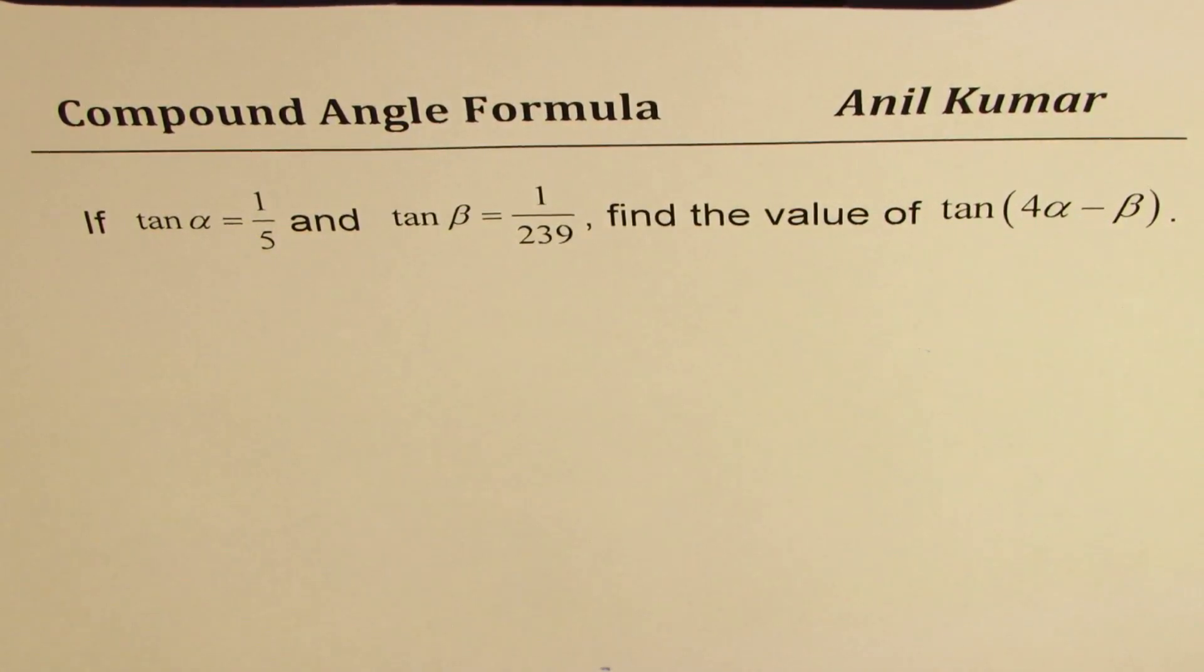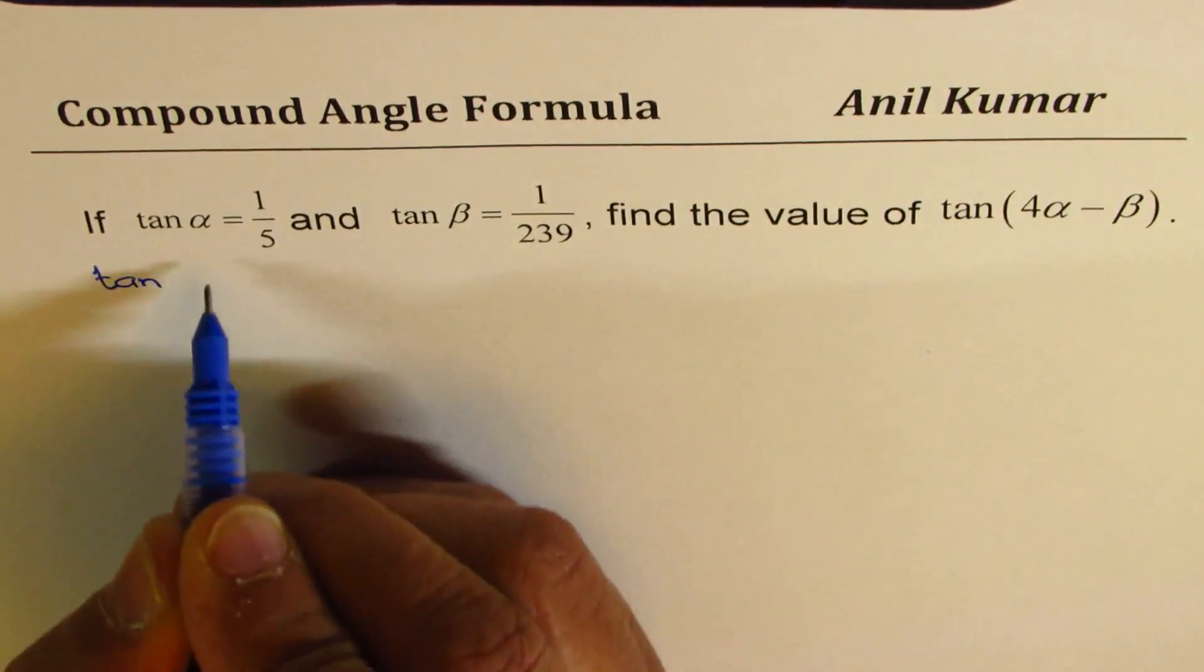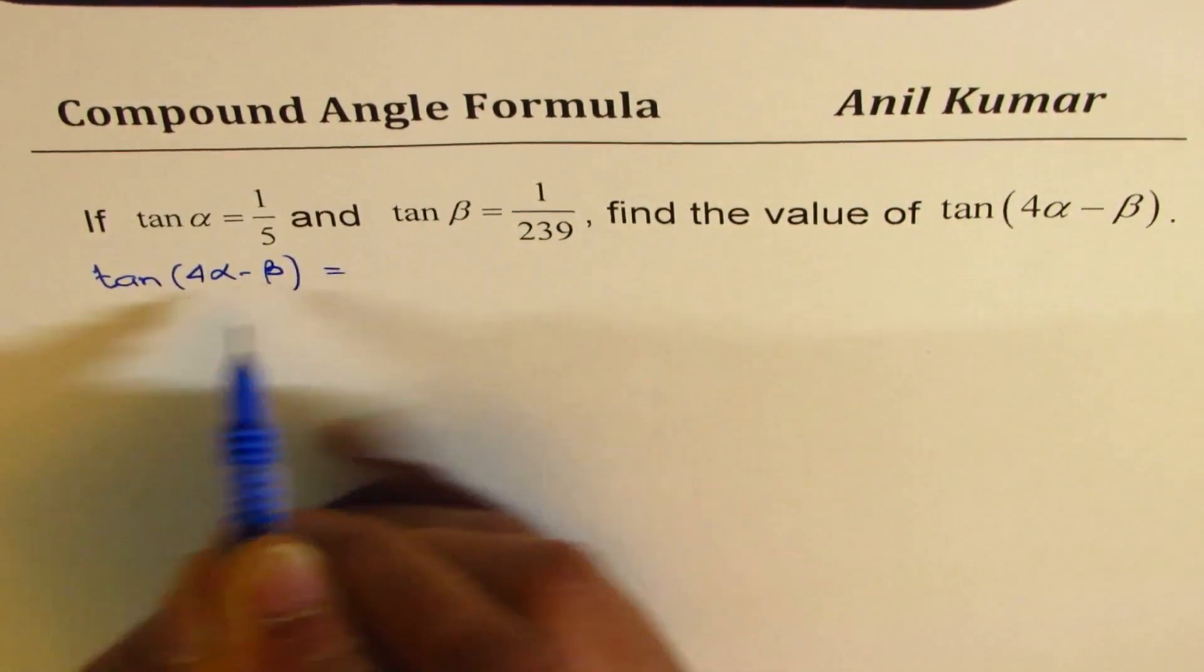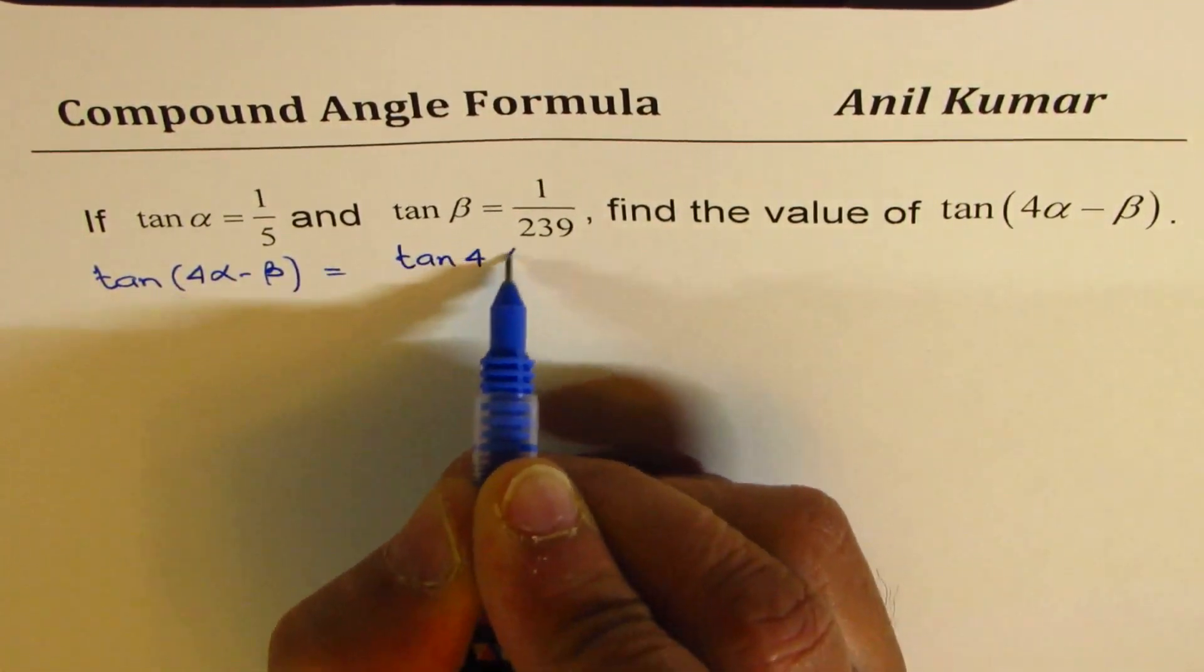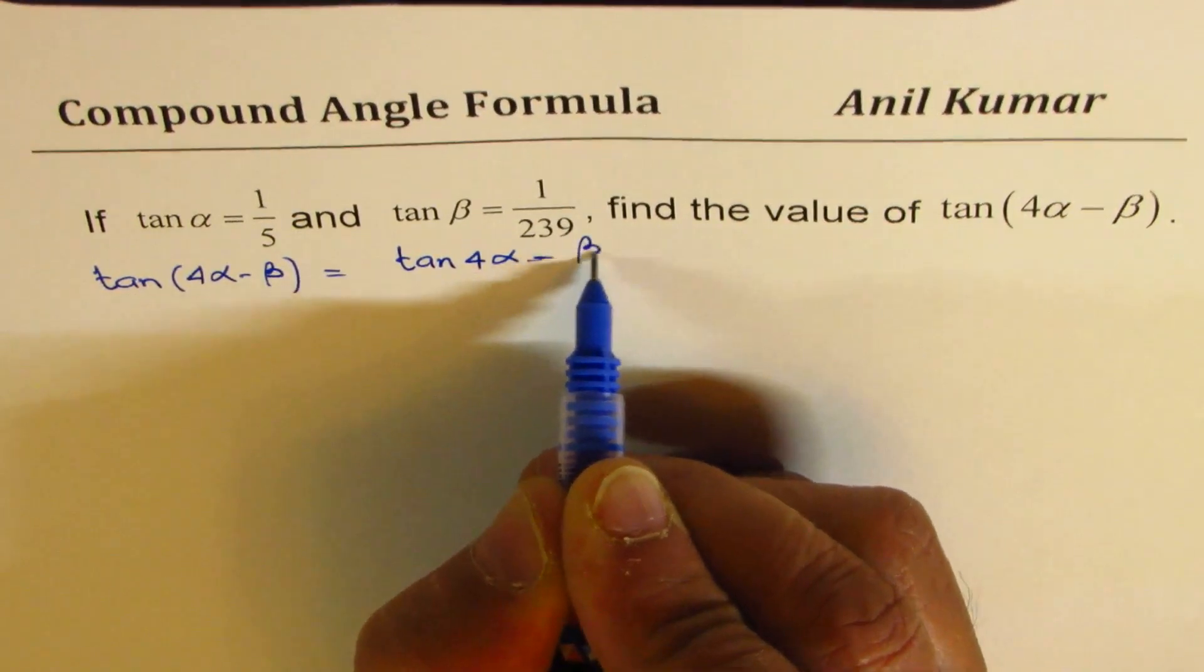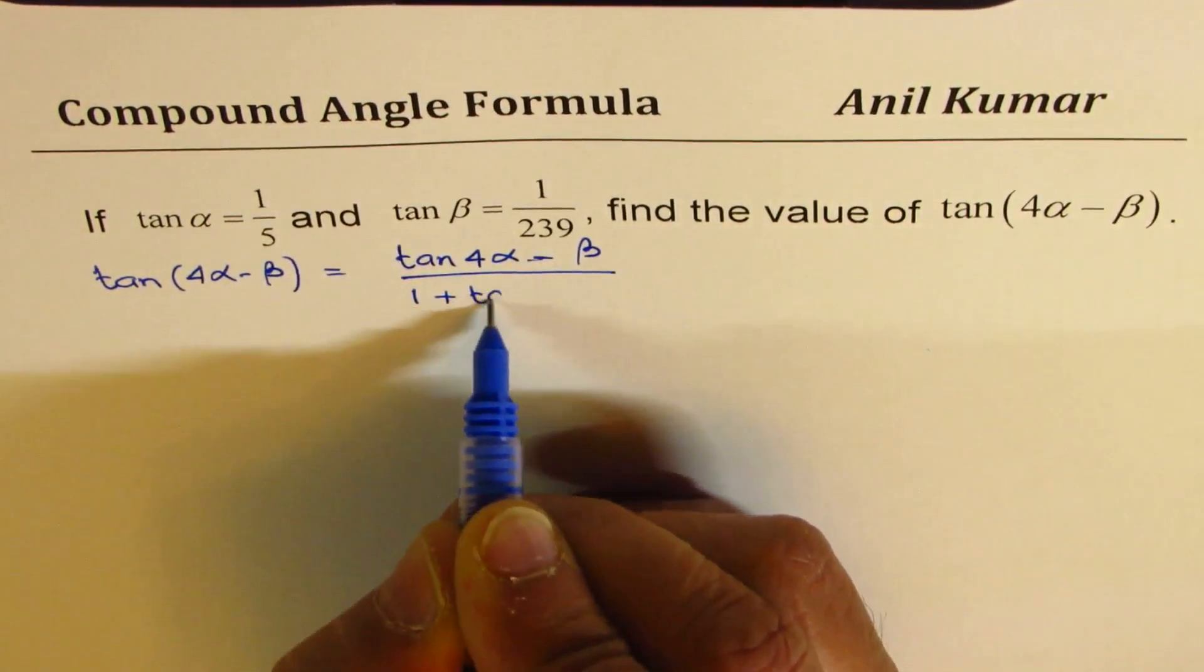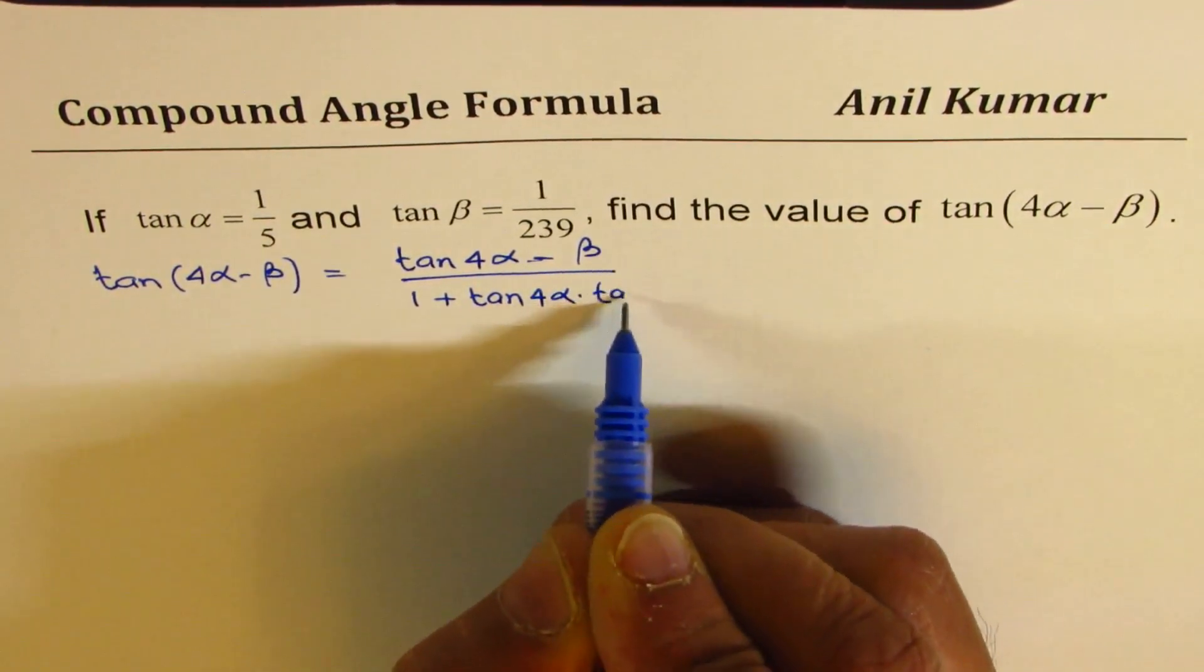You can always pause the video, answer the question, and then look into my suggestions. So let's write down what tan 4 alpha minus beta is. Using the formula, we know it is tan 4 alpha minus tan beta divided by 1 plus tan 4 alpha tan beta, right?